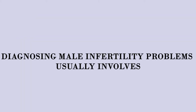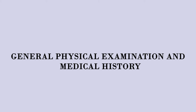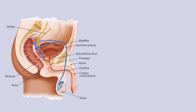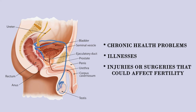For male infertility, diagnosing problems usually begins with a general physical examination and medical history. This includes examining the genitals and asking questions about any inherited conditions, chronic health problems, illnesses, injuries, or surgeries that could affect fertility.